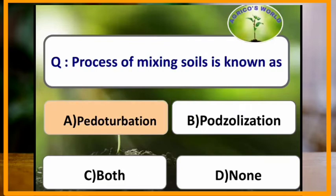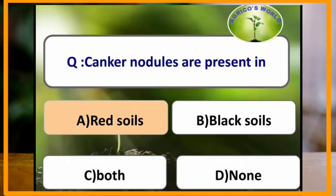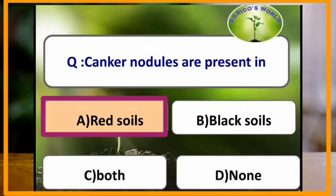Process of mixing soils is known as pedoturbation. Kankar nodules are present in which type of soils? Kankar nodules are present in red soils.